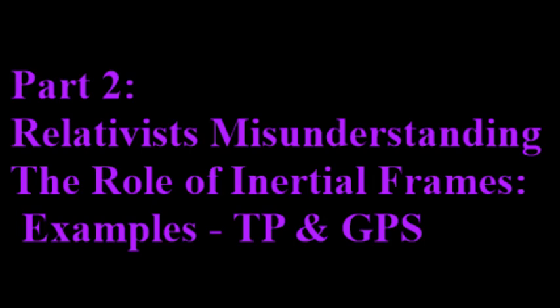Hello, this is Nick of Time with the 25th talk in our series on the physics of time. As you can see, this is part two, so you have to have seen the prior talk — talk 24 — before seeing this talk to really understand it. The previous talk gives the background for this talk. The topic is relativists misunderstanding the role of inertial frames, which causes lots of problems and serves as a major obstacle to relativists seeing and understanding those problems. Here we'll go into two examples using the Twin Paradox and GPS.